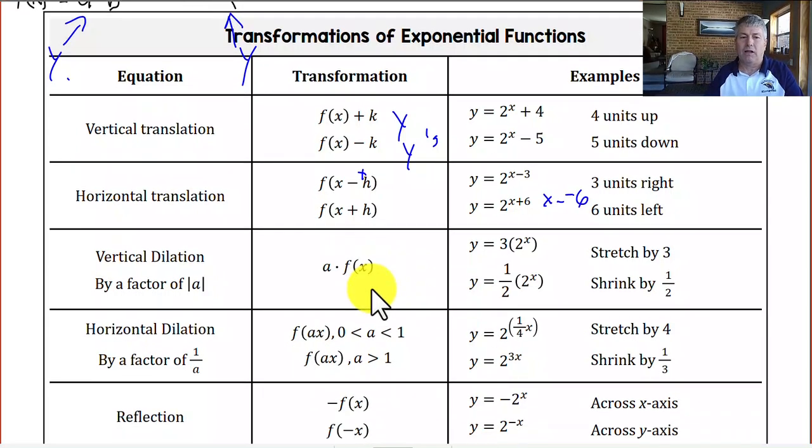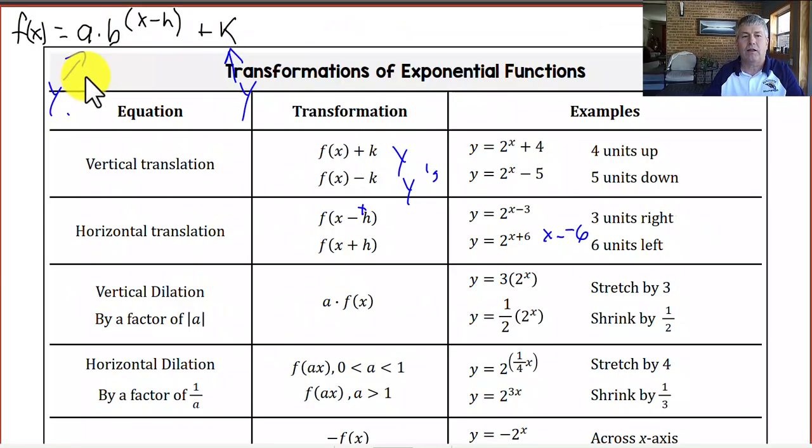A vertical dilation, our a is outside of our f(x) here, so that's going to impact our y's. If we make a equal 3, it's going to stretch our y's by 3. We're going to go up 3 times as high. Or we'll shrink it by 1 half, we'll only go half as high for every one.